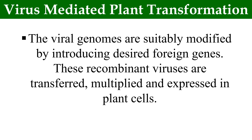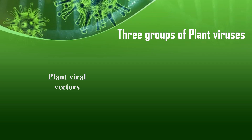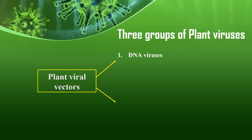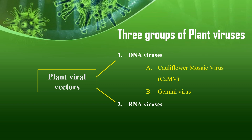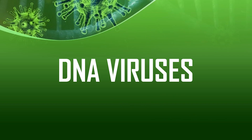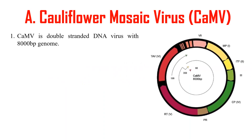Remember that plant viruses do not integrate into the host genome. There are three groups of plant viruses, or plant viral vectors: first are the DNA viruses, and second are RNA viruses. Examples of DNA viruses include cauliflower mosaic virus and gemini virus, while for RNA viruses the example includes tobacco mosaic virus.